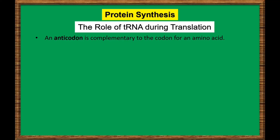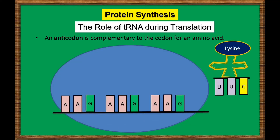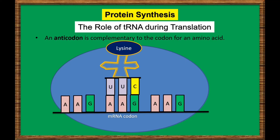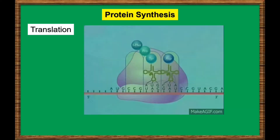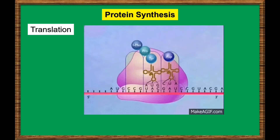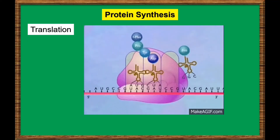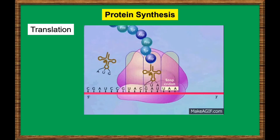Each tRNA molecule has an anticodon for the amino acid it carries. An anticodon is complementary to the codon for an amino acid. For example, the amino acid lysine has the codon adenine, adenine, and guanine. So the anticodon is uracil, uracil, and cytosine. Therefore, lysine would be carried by a tRNA molecule with the anticodon UUC. Wherever the codon AAG appears in mRNA, a UUC anticodon of tRNA temporarily binds. While bound to mRNA, tRNA gives up its amino acid. With the help of rRNA, bonds form between the amino acids as they are brought one by one to the ribosome, creating a polypeptide chain. The chain of amino acids keeps growing until a stop codon is reached.